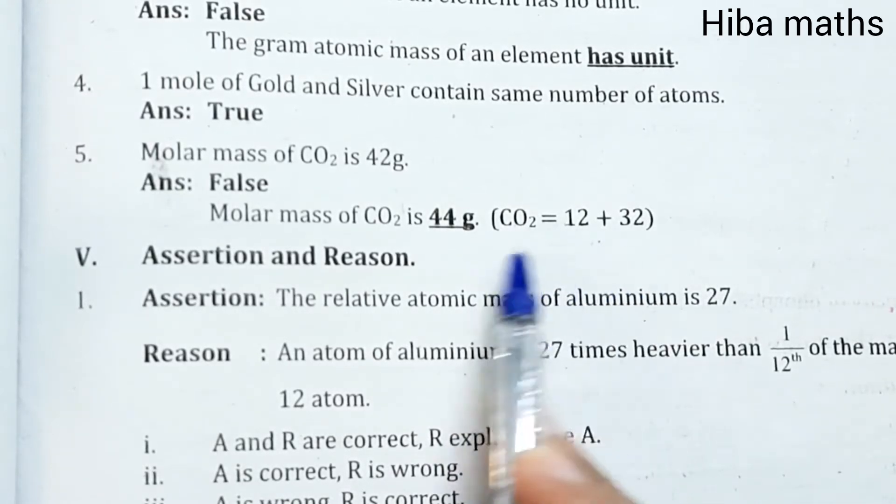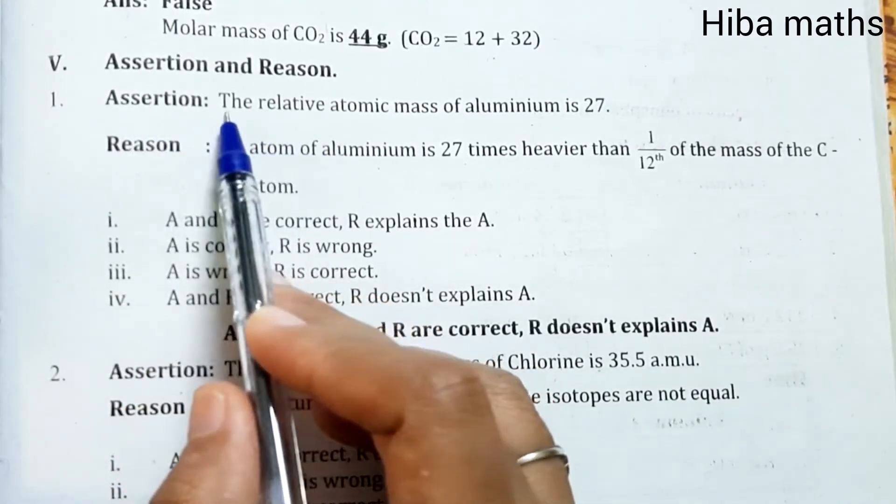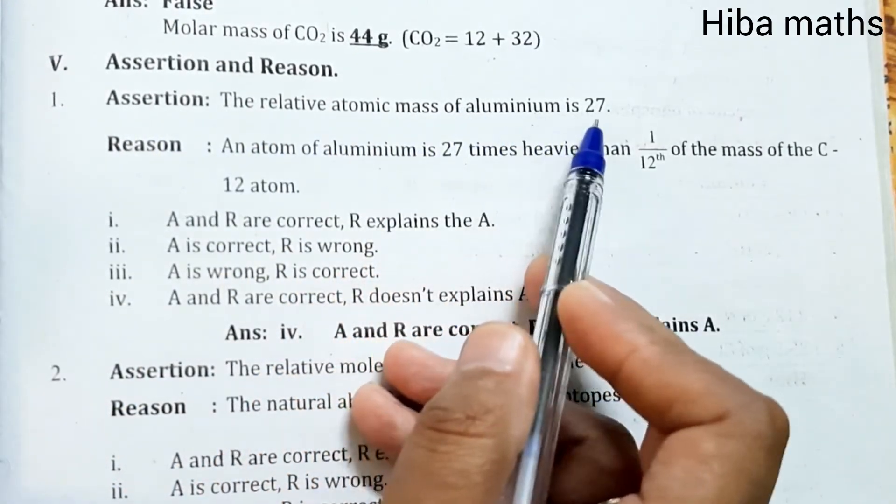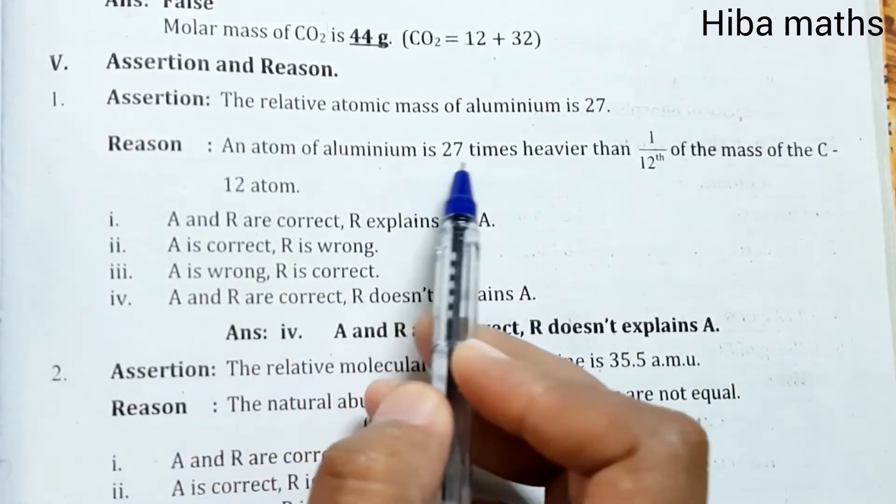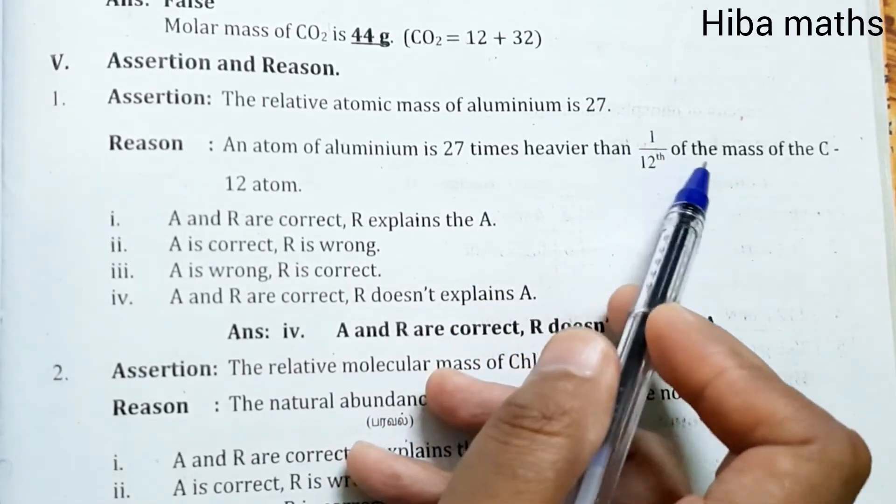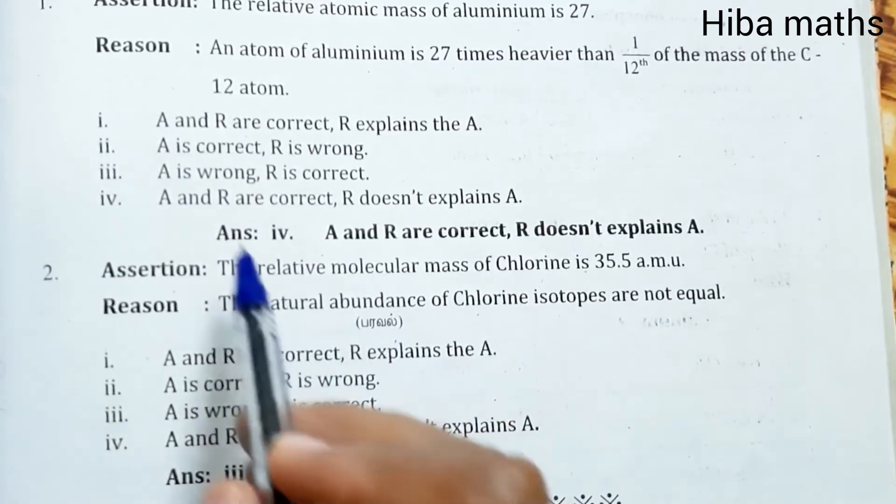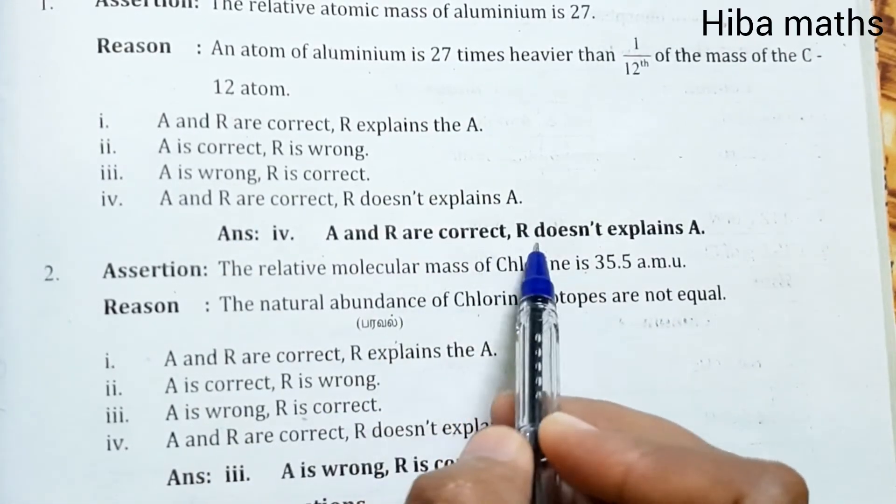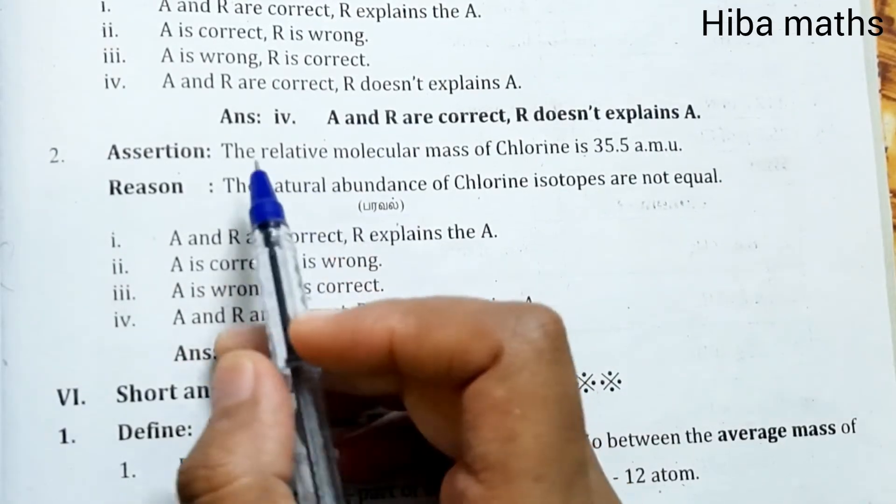Assertion and Reason. Assertion: The relative atomic mass of aluminum is 27. Reason: An atom of aluminum is 27 times heavier than 1/12th of the mass of C12 atom. Fourth option: A and R are correct, and R does not explain A.